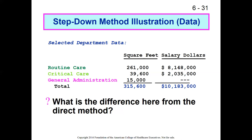In order to get a more precise cost, we have to include some of the overhead involved in providing general administration services to routine care and critical care. If routine care uses a lot more general administration — as it does, roughly four to one based on the salary dollar difference — and if there's a difference in the ratio between critical care and routine care for facilities, which there will be — on square footage that's 261,000 to roughly 40,000, about a 6.5 to one ratio — this creates a potential for distortion if we use the direct method and ignore the fact that general administration is using some of the facilities cost.